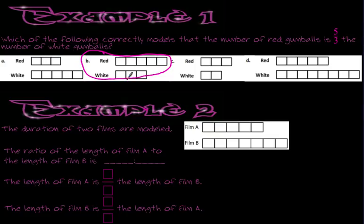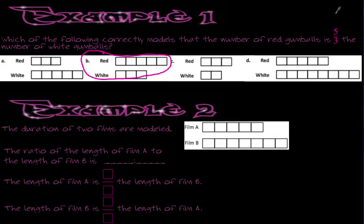You take that ratio and turn it into a fraction, and that fraction becomes the value. The value then tells me that if I know the number of red gumballs is 5 thirds the number of white gumballs, I can use 5 thirds and the number of red gumballs to help me find the number of white gumballs.